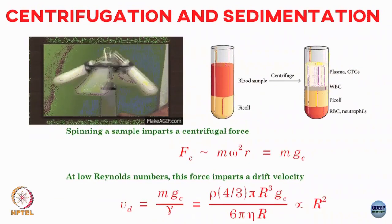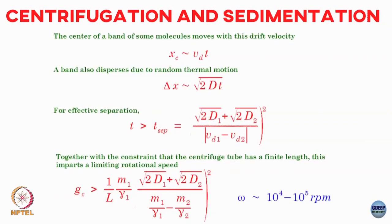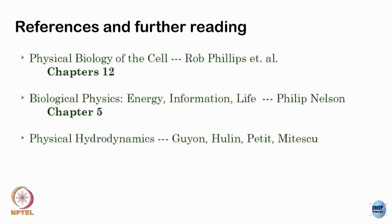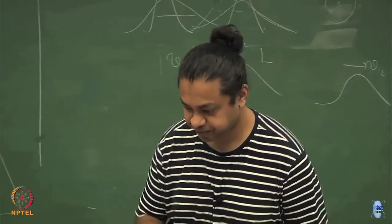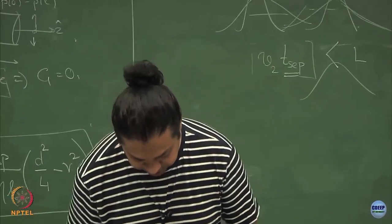Centrifugation uses the concept of drift velocity in the low Reynolds number regime to achieve effective separation between samples. Next class will cover bacterial locomotion, including Purcell's famous scallop theorem — what are effective swimming strategies for a micron-size bacterium as opposed to a fish. That will be covered on Friday. For more details on these calculations, the physical hydrodynamics book is a good reference.